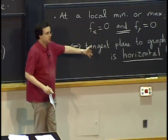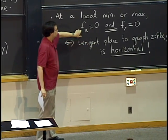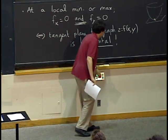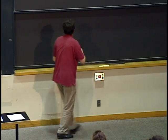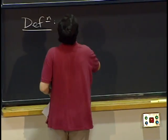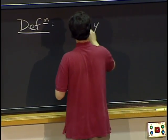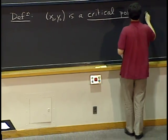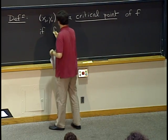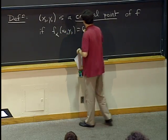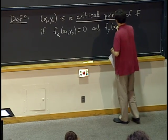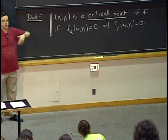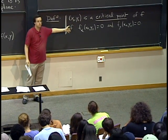We will have a name for this kind of point because these conditions are necessary but not sufficient — there are other kinds of points where partial derivatives are zero. The definition: we say that (x₀, y₀) is a critical point of f if the partial derivative with respect to x and the partial derivative with respect to y are both zero. More generally, you want all partial derivatives to be zero at the same time, no matter how many variables you have.